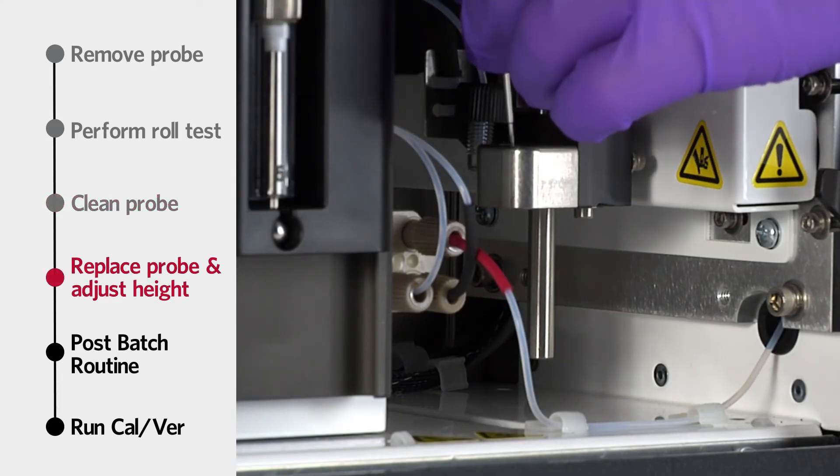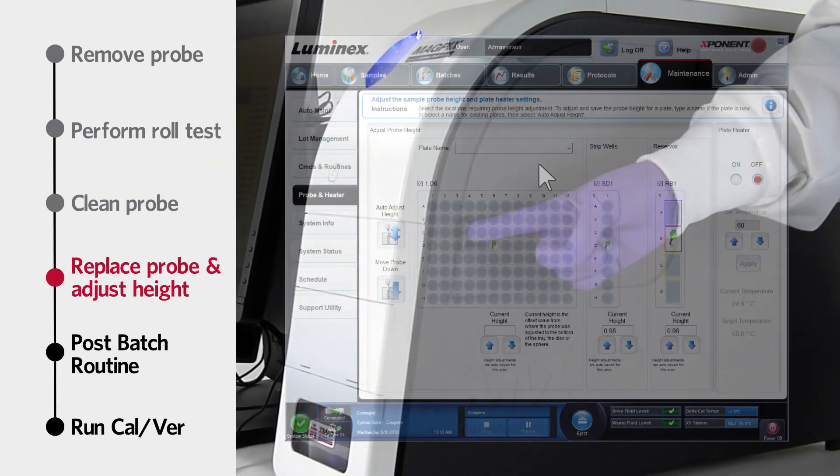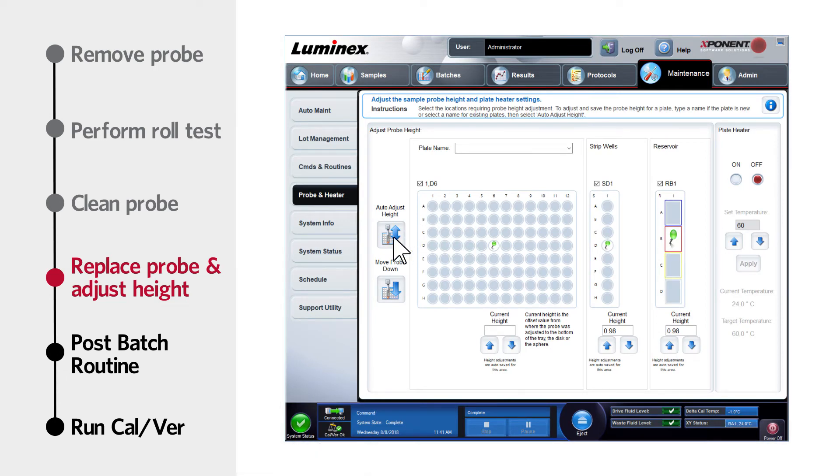Replace the sample probe, tighten the cheminert fitting until you hear an audible click, and adjust the sample probe height using the exponent software.